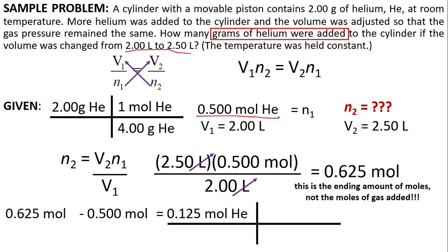So, using the molar mass, the periodic table, we'll know that the molar mass of helium is 4.00 grams per mole. Cancelling the moles, we'll have the grams, 0.5 grams of helium. So, that's the final answer.